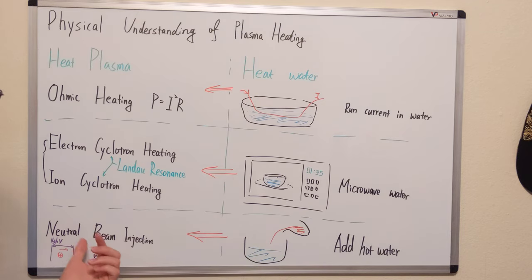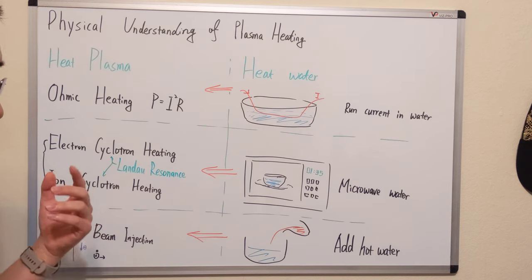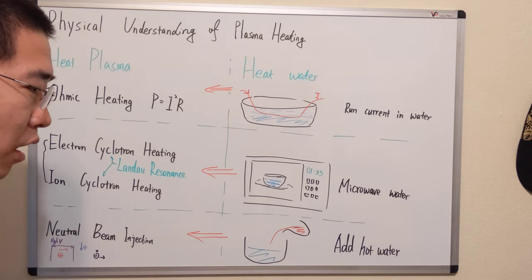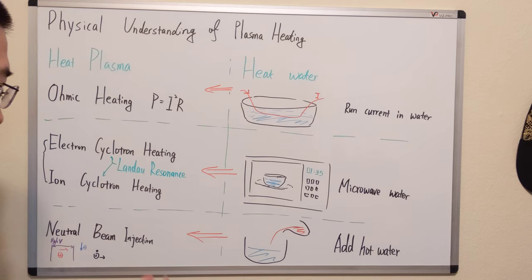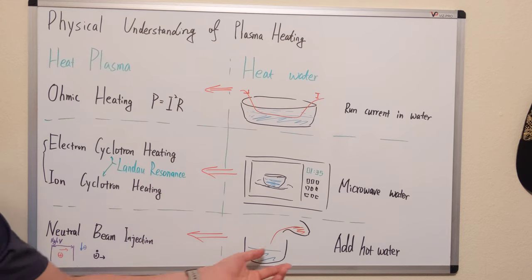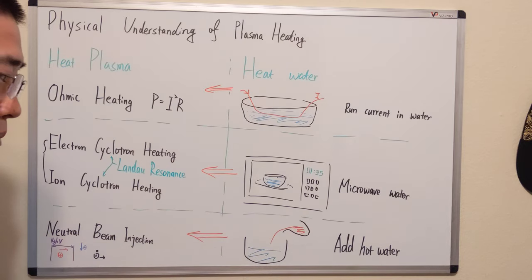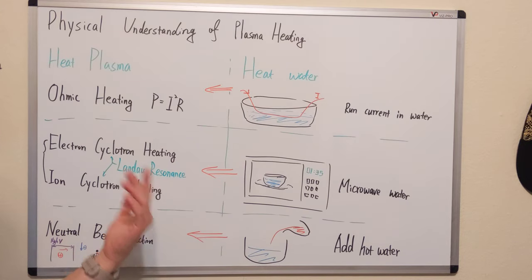Neutral beam injection is pretty much adding hot water — or fast neutral particles — into the plasma. In the sense of heating water, it's basically adding hot water into cold water.